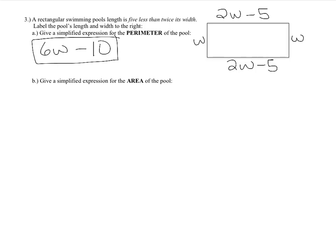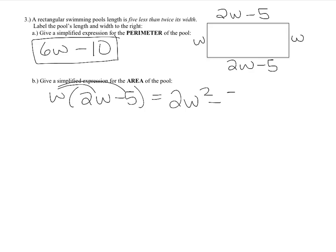For the area of the pool, multiply length times width: w times (2w minus 5). Distribute to get 2w squared minus 5w. That's the simplified expression for the area of the pool.